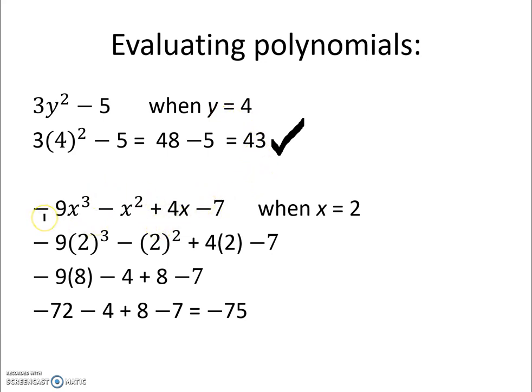Moving on, the next polynomial is negative 9x cubed minus x squared plus 4x minus 7. And they want us to evaluate it when x equals 2.